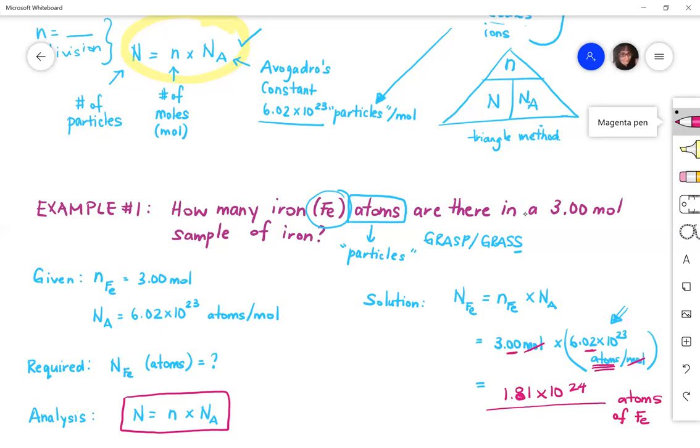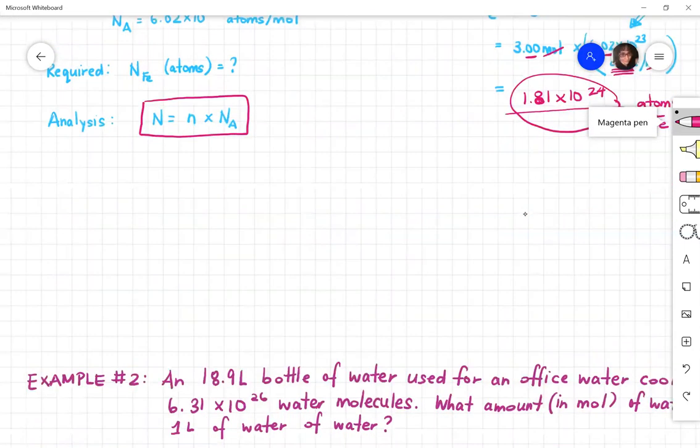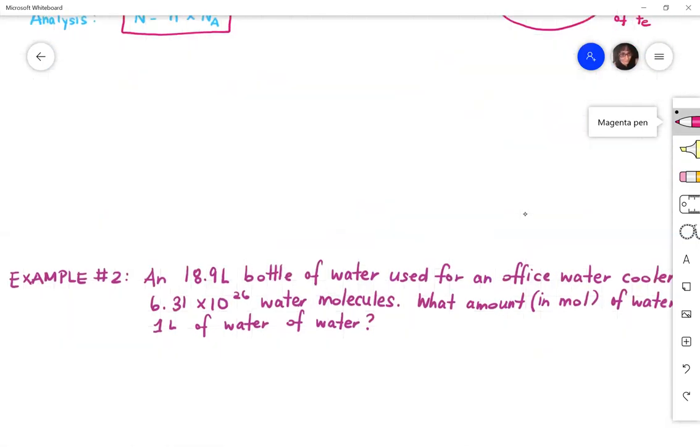So what did I do in this question to recap? I was working with the equation that number of particles, in this case number of atoms, is equal to the number of moles times the Avogadro's constant. I filled in the information given in the question, substituted and solved in order to get my answer.